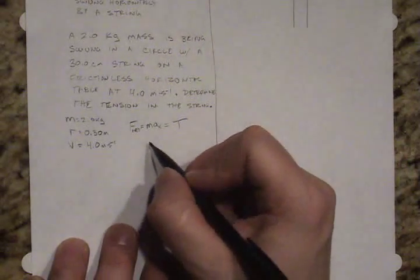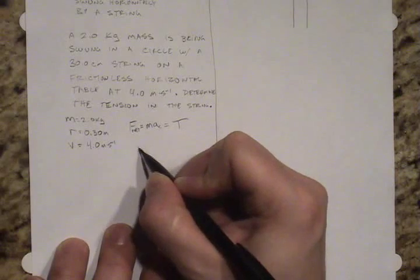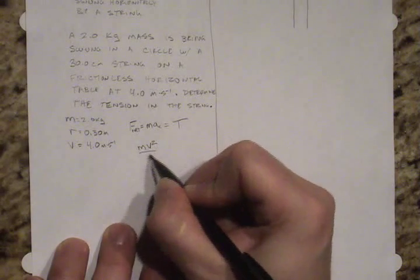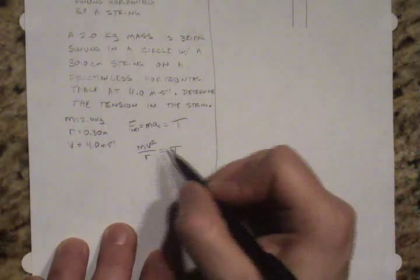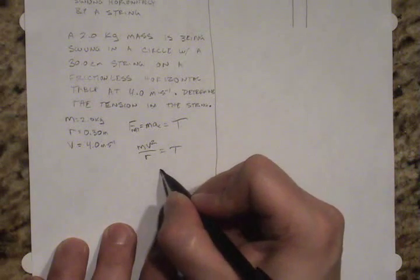So in this case, this expression will come out to be m v squared over r is equal to T, and I need to simply plug in these values.